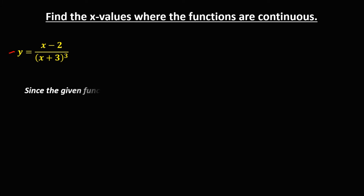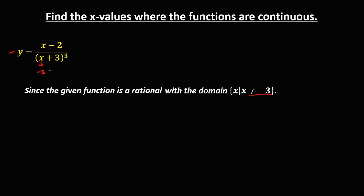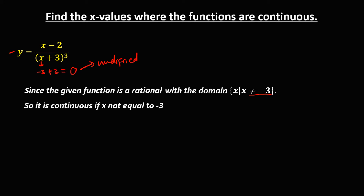For this given function, since it is a rational function in fraction form, the domain is x such that x is not equal to negative 3. Because if x is equal to negative 3, the denominator becomes 0, and a 0 denominator is undefined. Therefore, this function is continuous if x is not equal to negative 3.